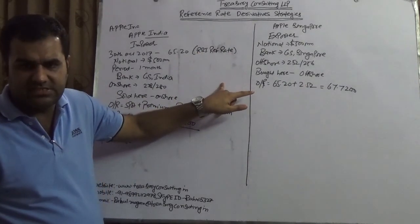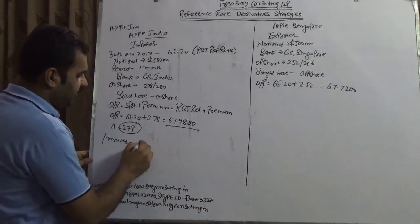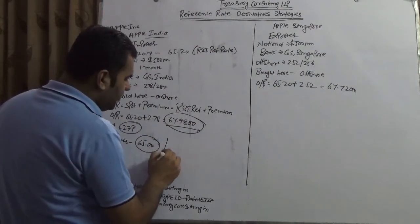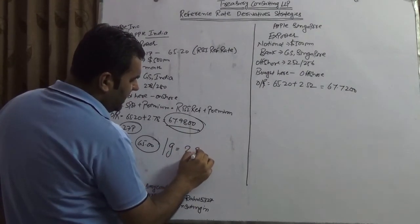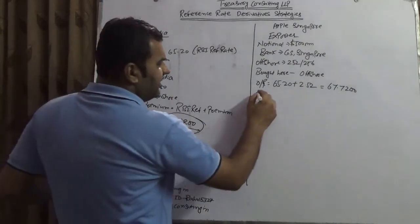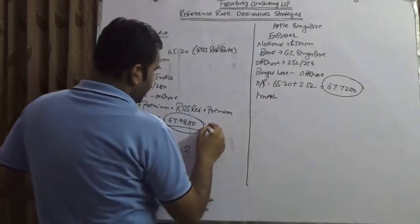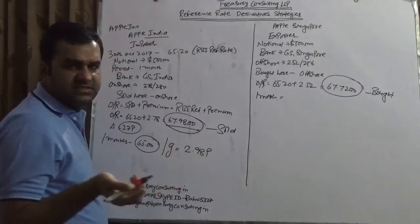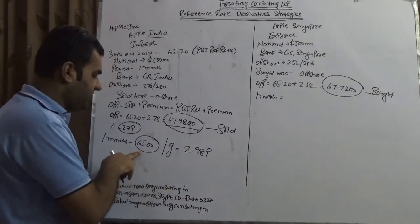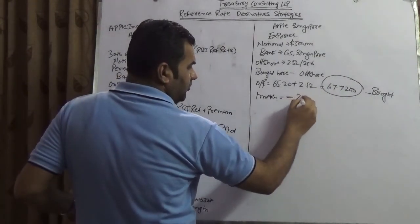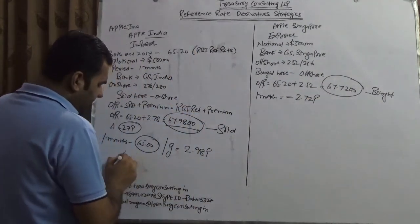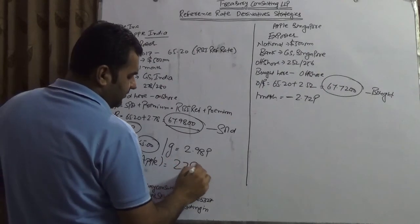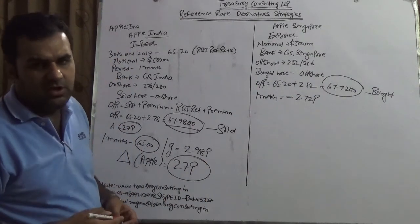Non-deliverable trades are always settled at RBI reference rate. Since it's Apple and both sides we have the same bank Goldman Sachs, take any RBI reference rate—let's take 65. You have sold at 67.98 and RBI reference rate turns out to be 65. It means you have got a gain of 2 rupee 98 paisa. Here after one month, you bought at 67.72 and the RBI reference rate was 65, so you would have a loss of minus 2 rupees 72 paisa. The net gain in the books of Apple once they consolidate would be equals to 27 paisa.